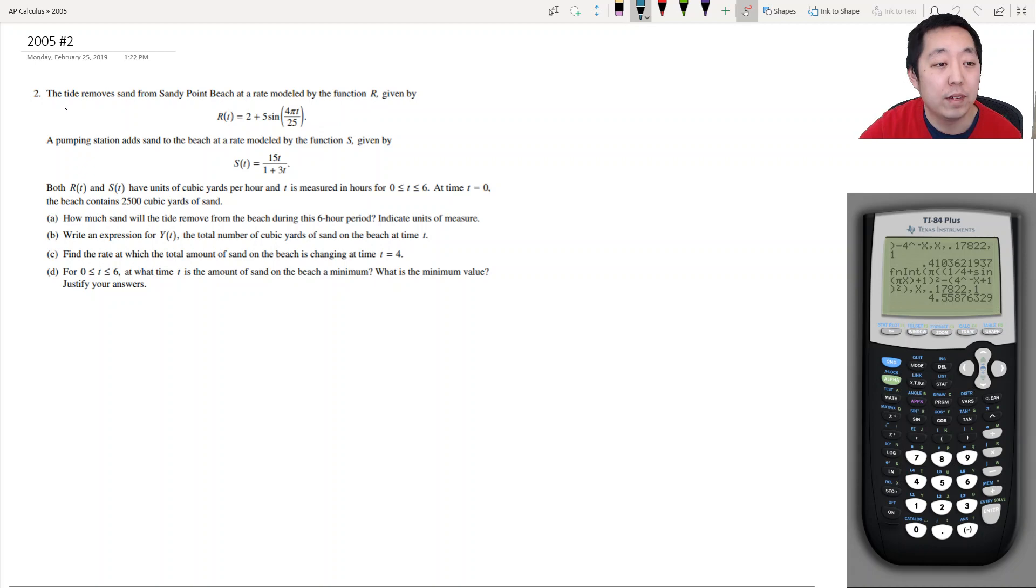So here we have the tide removes sand from Sandy Point Beach. Pull up my calculator and clear it. The tide removes sand from Sandy Point Beach at a rate modeled by this function. A pumping station adds sand to the beach at a rate modeled by this function. So we are going to remove sand at this rate and add sand at this rate.